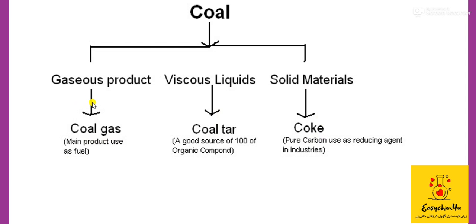Coal gas is mainly used as a fuel. Coke is mainly a carbon-containing compound and it is also used as a reducing agent in industries. Coal tar is a viscous liquid and is the source of hundreds of organic compounds. It will undergo fractional distillation to get all these useful organic compounds.